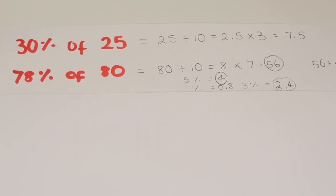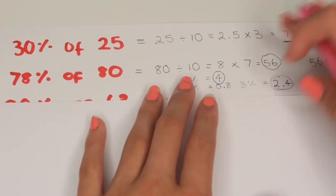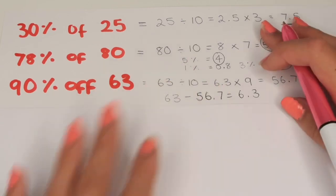We then add the 70%, the 5%, and the 3%. 56, 4, and 2.4 which gets us 62.4, except you can't see it because I put it outside of the frame.